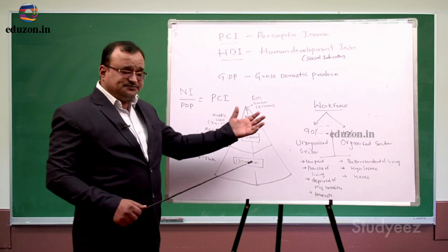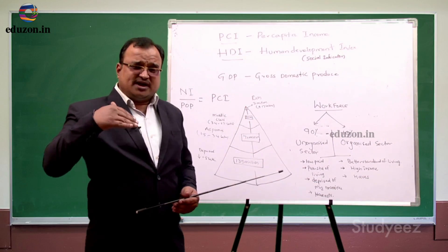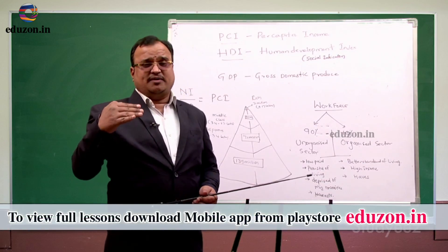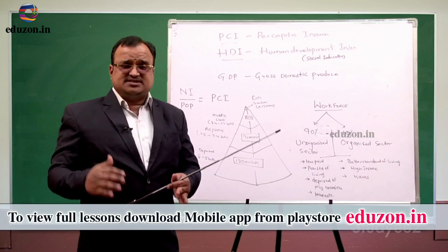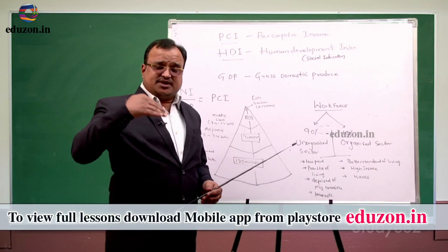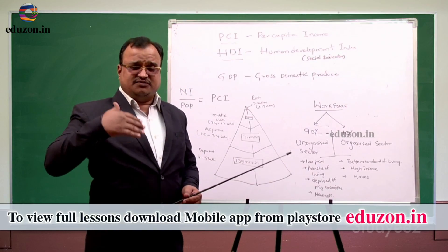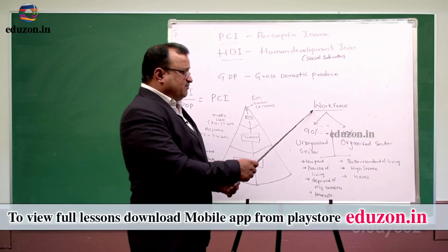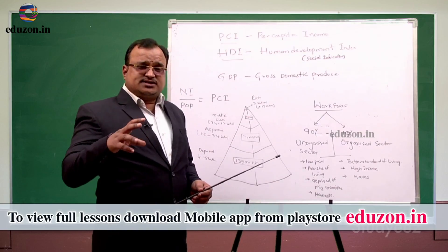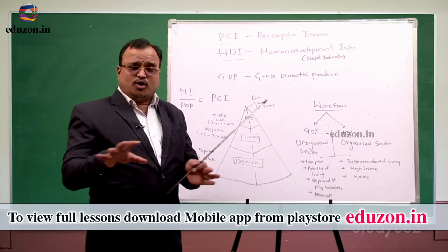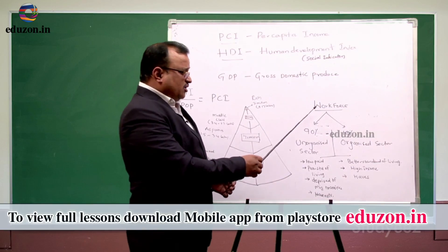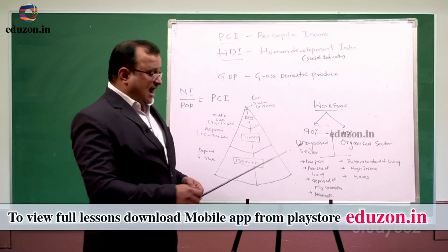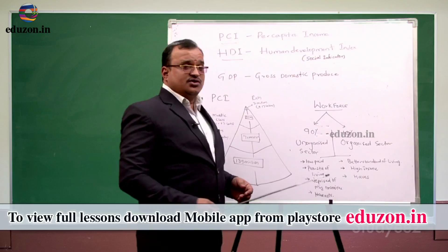Let us analyze why, even though some countries' per capita income is very high, the socio-economic development can be very poor. Take India as the best example. Even though our per capita income is increasing year on year and we are an aspiring, developing country, if you look at the workforce, it is unorganized and not properly distributed. Out of 100% of India's workforce, 90% is in the unorganized sector and only 10% is in the organized sector.